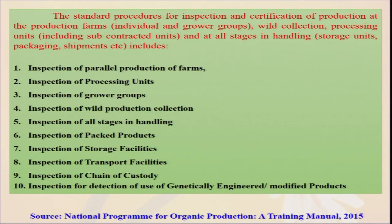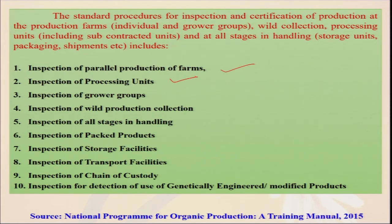Standard procedures for inspection and certification cover: production at farms by individual growers and grower groups, wild collection, and inspection of parallel production of farms. Inspection of the processing unit — where turmeric powder, juices, beverages, and other things are made — also comes under the purview of inspection. Inspection of grower groups is important when not one but ten, one hundred, or two hundred farmers form a cluster and want to certify their combined area.